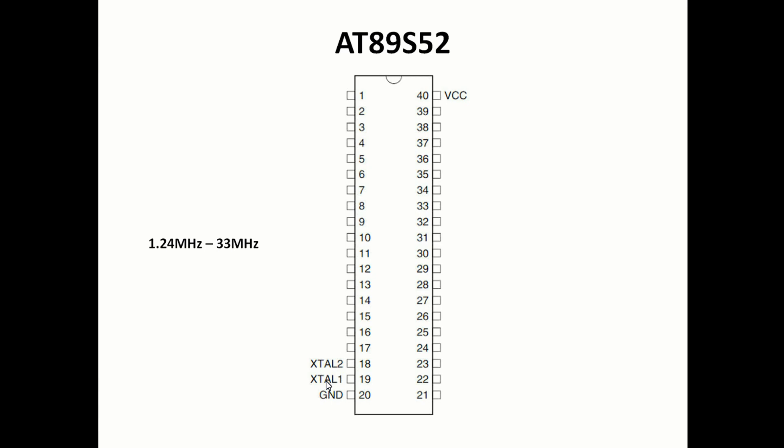From the datasheet, you can see three pins from pin 29 to 31. Pin 31 is the External Access pin (EA). As we studied in the architecture lecture, this EA pin differentiates between external and internal memory. If this pin is connected to ground or given a value of 0, programming instructions will be fetched from external memory.